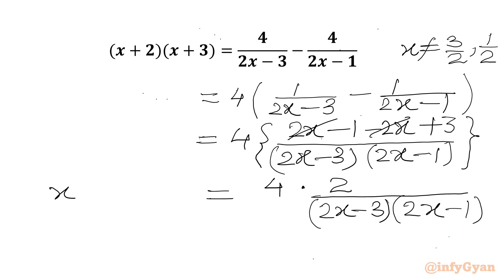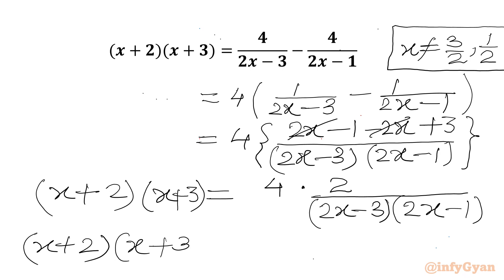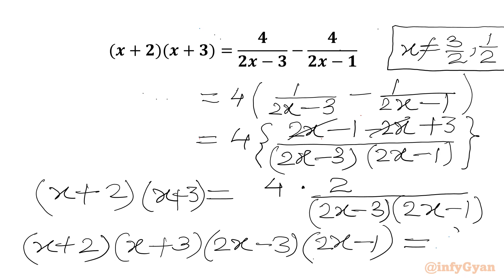The left hand side is (x+2)(x+3). Since x cannot be 3/2 and 1/2, we can cross multiply — multiply both sides by (2x-3)(2x-1). We will get (x+2)(x+3)(2x-3)(2x-1) equal to 4 times 2, which is 8.